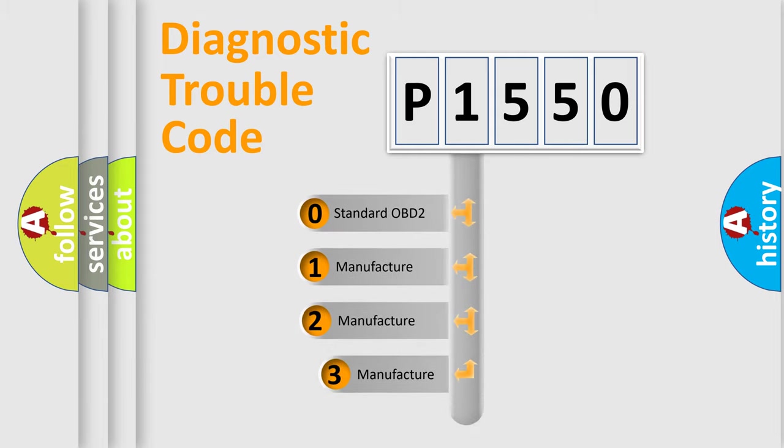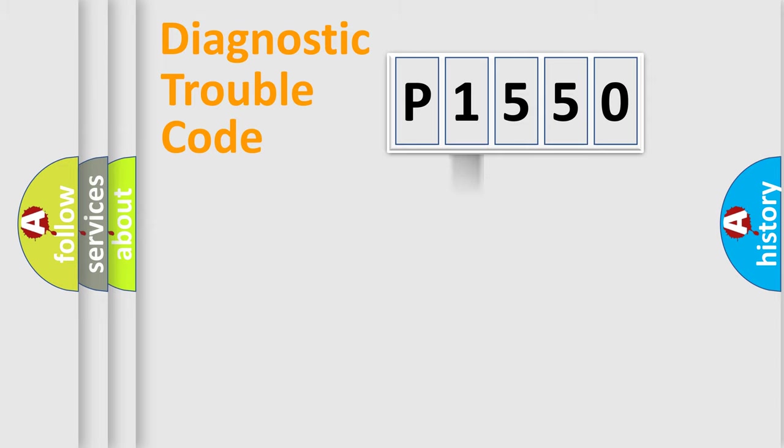If the second character is expressed as zero, it is a standardized error. In the case of numbers 1, 2, or 3, it is a manufacturer-specific expression of the car-specific error.